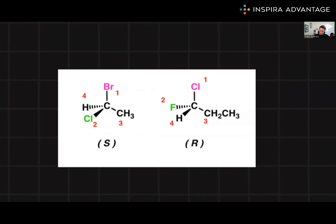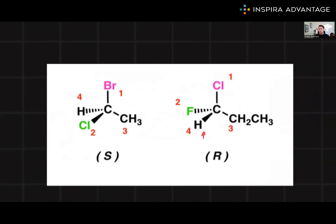Then we trace a path from the highest to the lowest priority. Let's check this with the S enantiomer. We draw a circle from one, two to three. It's clockwise. Then we check the atom pointing at us. If that's the lowest priority, we have to flip it. Because this is not the lowest priority, we keep this and say this is S configuration.